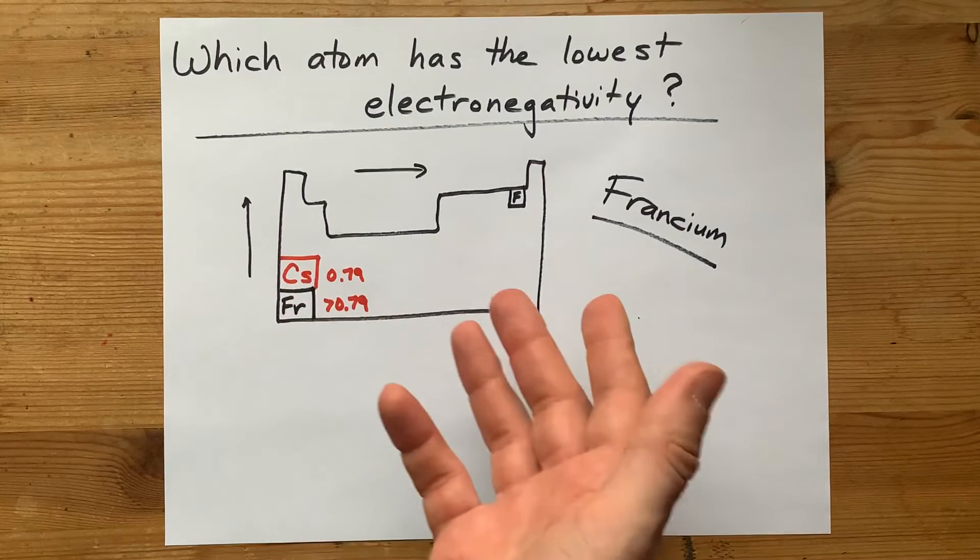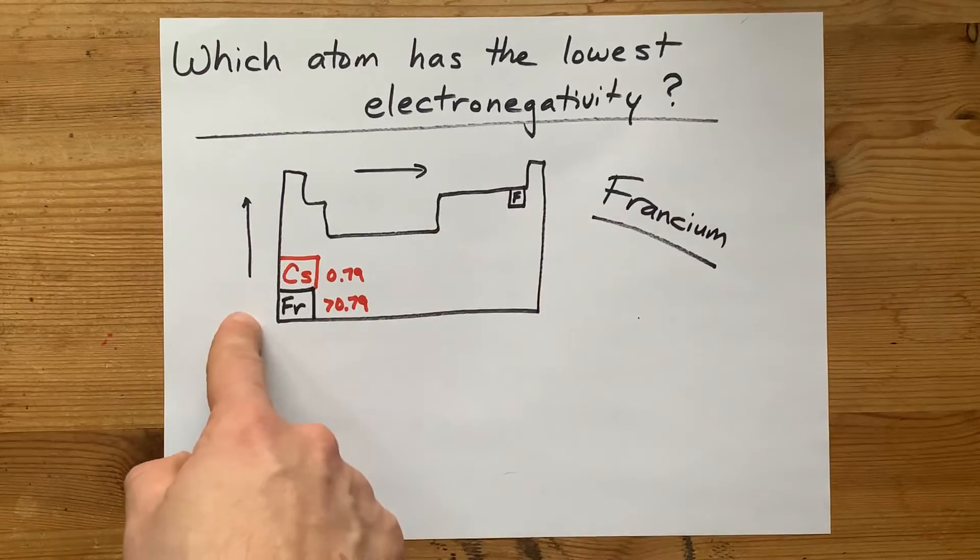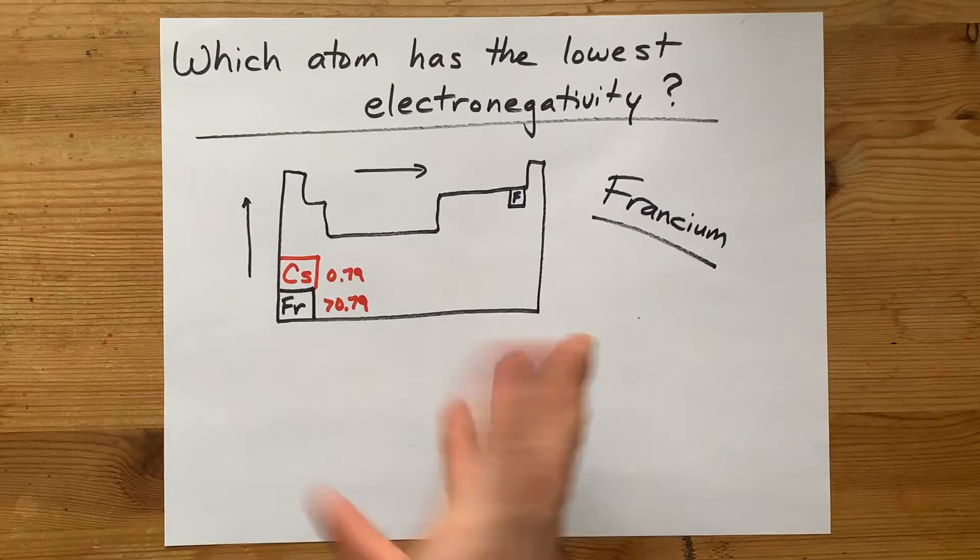If you chose cesium on a test and your teacher marked you wrong and said it was francium instead, go to Wikipedia, bring that article up and prove to them that they're wrong, probably.